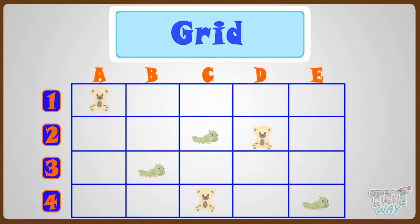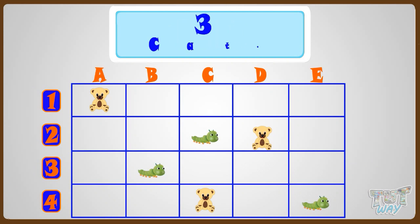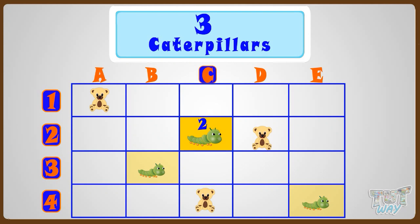We have a grid. Let's name the locations of all the toy caterpillars. There are three caterpillars. One caterpillar is at 2nd row, so 2, and column C, so its name will be 2C. So the position of the first toy caterpillar is 2C.